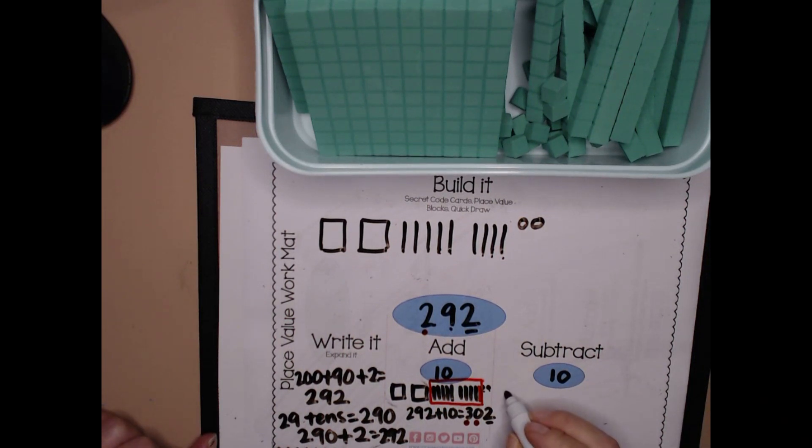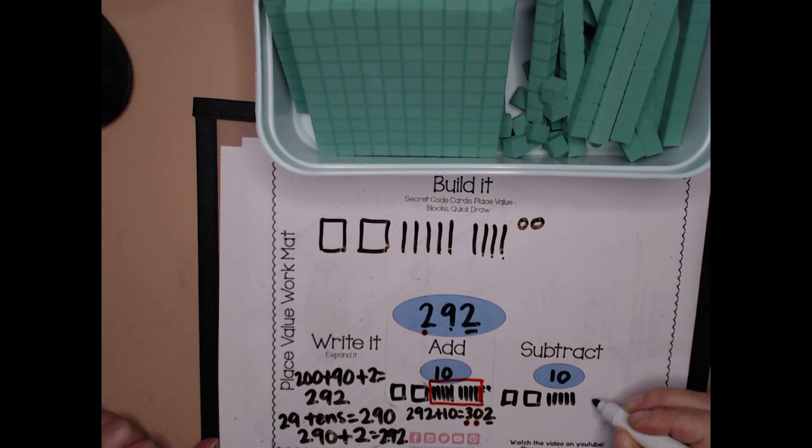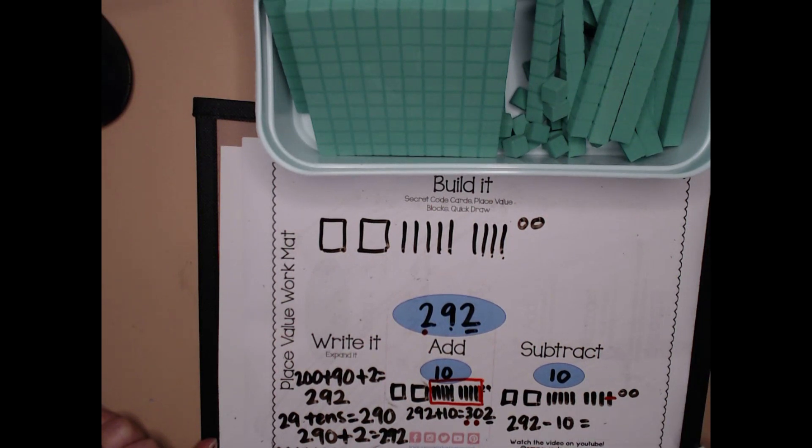Let's subtract 10. Count with me. 100, 200, 10, 20, 30, 40, 50, pause, 60, 70, 80, 90, 91, 92. Now let's subtract 10. In a different color, I'm going to use a minus sign. If I have 292 and I subtract 10, let's see what happened. 100, 200, 210, 20, 30, 40, 50, 60, 70, 80, 81, 82. I got 282. 282 means my two stayed the same. My 10 changed, but my hundreds stayed the same. 292 minus 10 equals 282. When I subtracted, the only thing that happened was my eight changed, my eight tens.